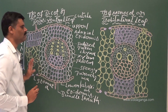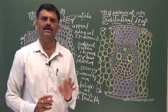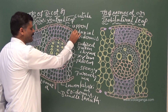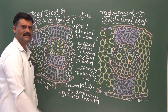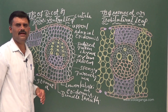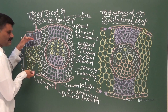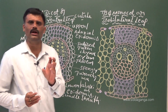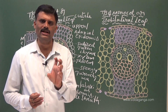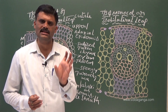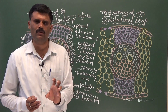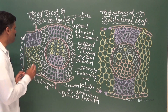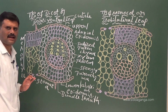This is about the structure of the dorsiventral or dicot leaf. The dicot leaf is called dorsiventral because the epidermis is divided into adaxial and abaxial surfaces — upper epidermis and lower epidermis. In between the two epidermis there is a mesophyll region, which we call ground tissue, filled with chlorenchyma. Chlorenchyma is specialized parenchyma cells which contain chloroplast.